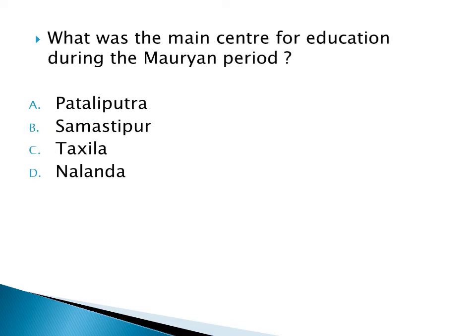What was the main centre for education during the Mauryan period? Option A: Patliputra, Option B: Samastipur, Option C: Taksila, Option D: Nalanda. The right option is Option C: Taksila.